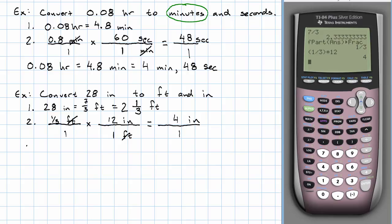So 28 inches that we started with, that's 2 and 1 third feet. That's 2 feet 4 inches. Okay. How do we go the other way around?